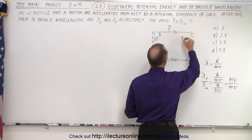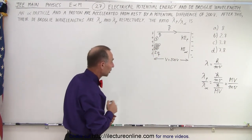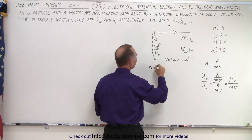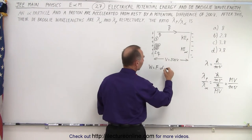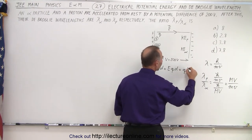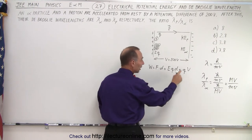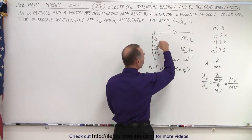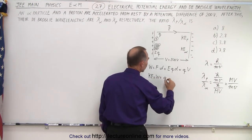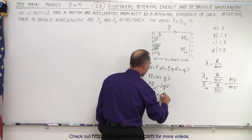We need to calculate those kinetic energies. We use the concept that work done equals force times distance. The force inside the electric field is E times Q, and E times D is voltage, so this becomes Q times voltage. The work done moving the particle across equals the increase in kinetic energy, which is Q times V. So the kinetic energy of the alpha particle is 2Q times V, and the kinetic energy of the proton is Q times V.